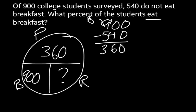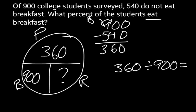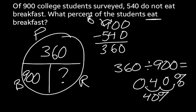Now I'll do the division: 360 divided by 900. Once I do that division, I end up with 0.4. That represents our percent, but as a decimal. So I move the decimal point two places to the right and add a percent sign — it's actually 40% who do eat breakfast.